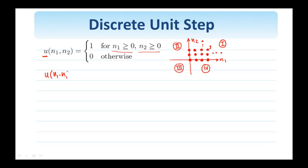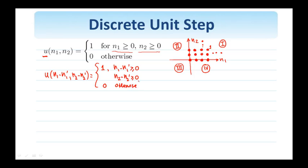We can shift the unit step function: u[n1 − n1-prime, n2 − n2-prime] by definition equals 1 as long as its arguments are non-negative, meaning n1 ≥ n1-prime and n2 ≥ n2-prime, and 0 otherwise.